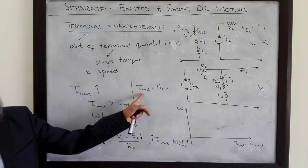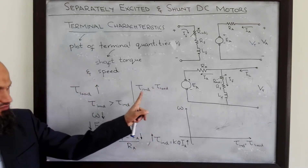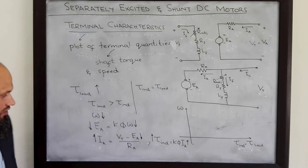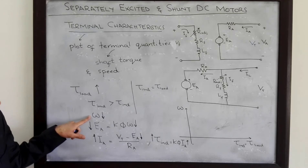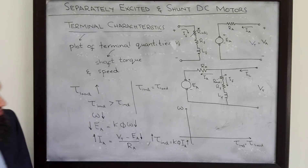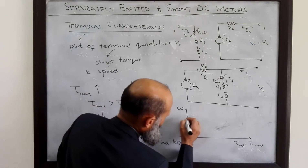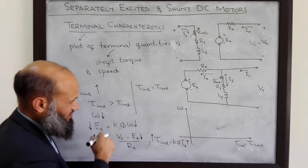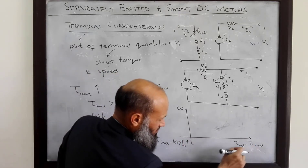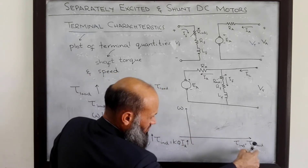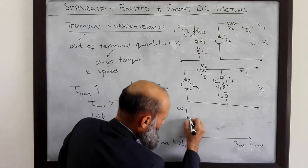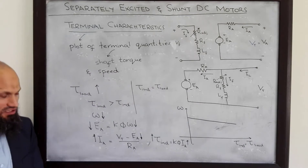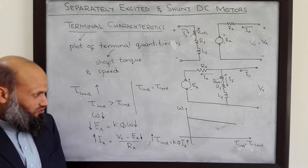After the transient, steady state is achieved again. Induced torque becomes equal to the load torque, but now the motor is running at a lower speed. Intuitively, what we see is that as we increase the load torque, after the transient the speed decreases, and again the induced torque becomes equal to the load torque. These are the torque-speed characteristics for a shunt DC motor.